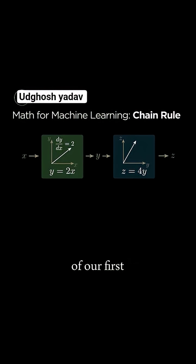Computing the slope of our first block, dy/dx equals 2, and the slope of our second block, dz/dy equals 4.